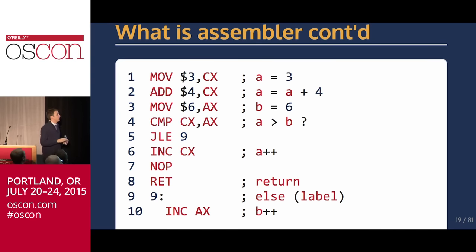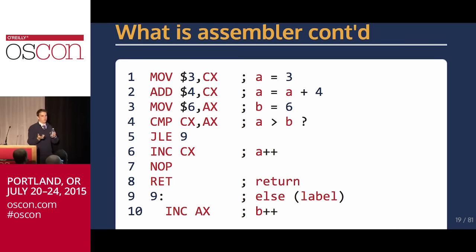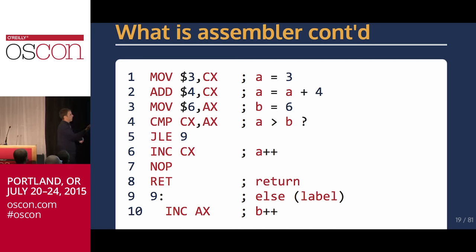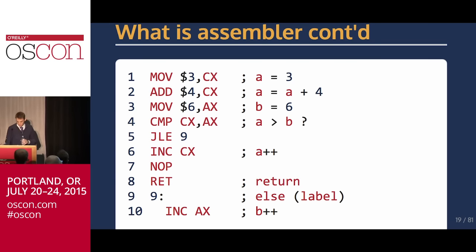So first we're moving the number three into register CX, then adding four and storing that in CX — that's A. We're moving six into register AX, then comparing the two registers. This sets one bit in a different register called the flags register. When we call JLE — jump less than or equal to — it checks the state of that flag. If the bit is set, it does the jump; if not, it won't. If we say nine, this jumps to label nine where we increment B by one. That's the basic idea.